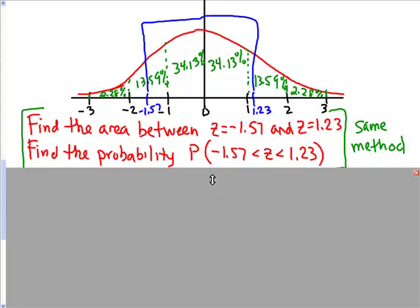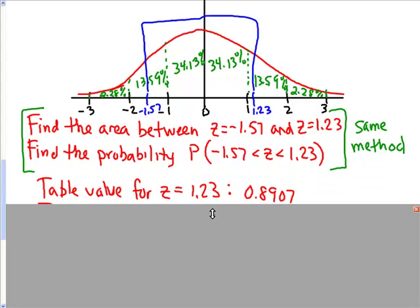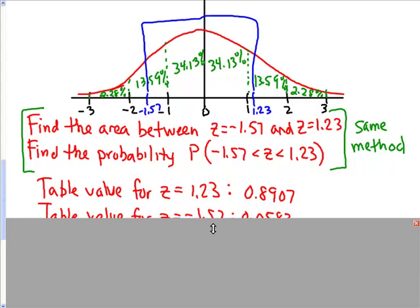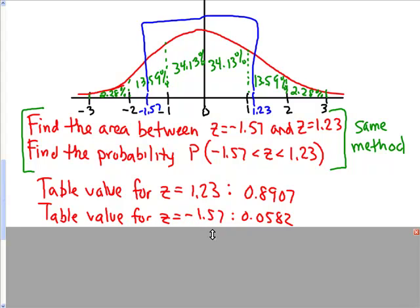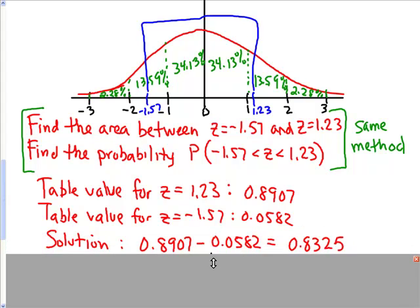So the way we did that before is we went to our table, and we first found the table value for 1.23, which was 0.8907. Then we went to the table value for z equals negative 1.57, which is 0.0582. And our solution was to subtract the smaller from the larger, and we got 0.8325, and that looks like about 83% of the curve.